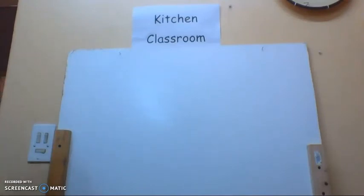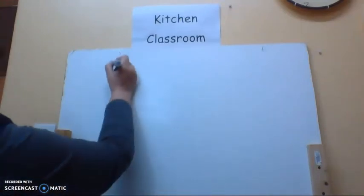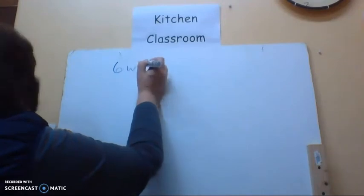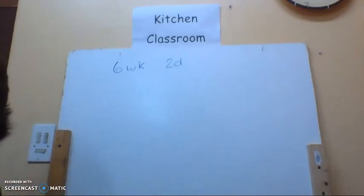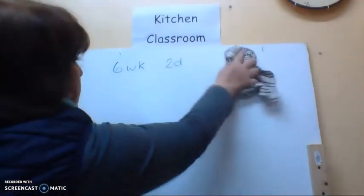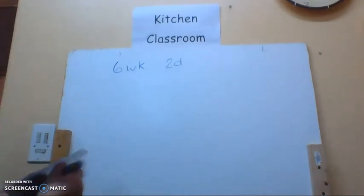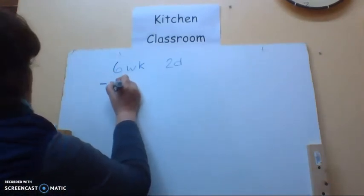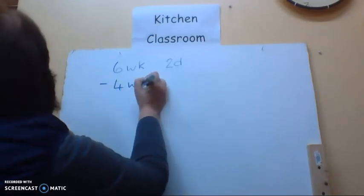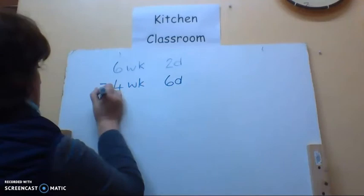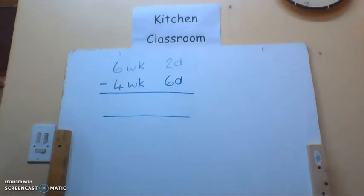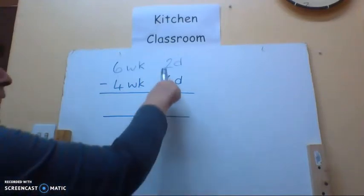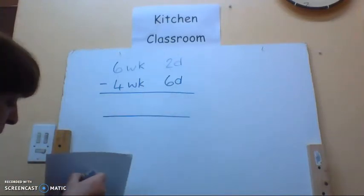Let's look at if we've got weeks and days. So if I've got six weeks and two days and I'm going to take away four weeks and six days. Now I said to you we need to know how many days in a week. So there are seven days in a week. So I said we also start subtracting at the lesser unit of time. So I can't say two days minus six days. That is not possible.